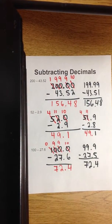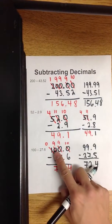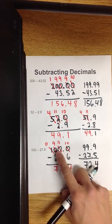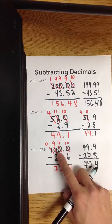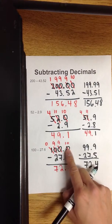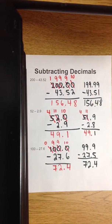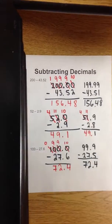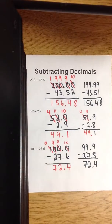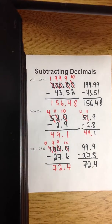I would only use the shortcut if you have like three zeros or four zeros. So this is the study of subtracting decimals.